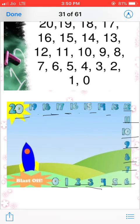What is it? 20. Then before 20 we have 19. Before 19, 18. Before 18, 17. Before 17, 16. Before 16, 15. Before 15, 14. Before 14, 13. Before 13, 12. Before 12, 11. Before 11, 10.